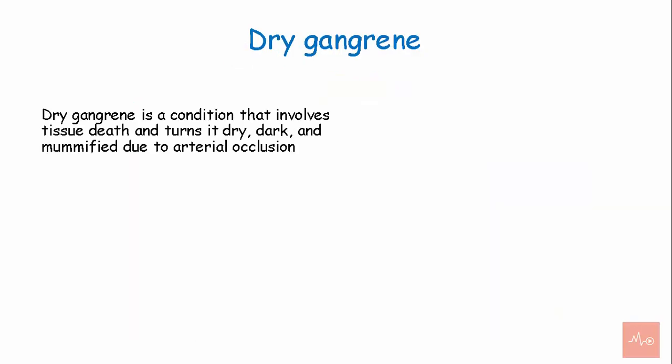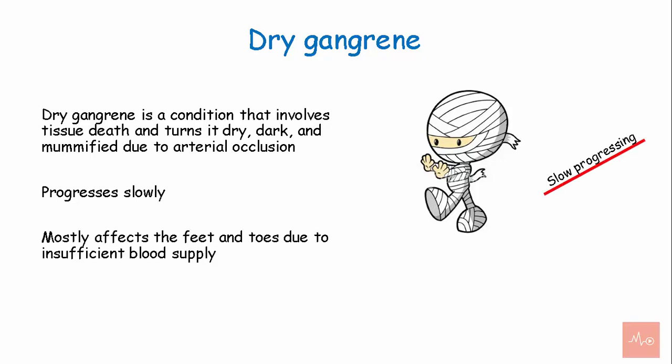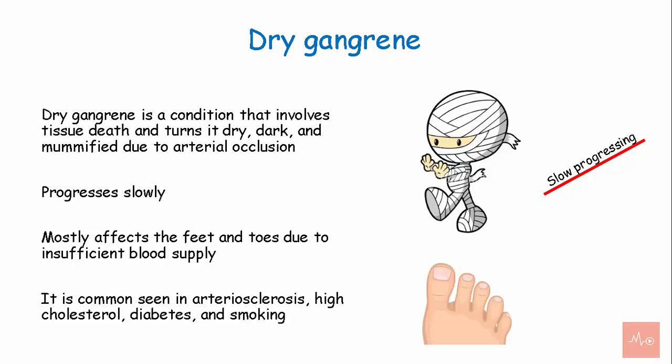Dry gangrene is a condition that involves tissue death and turns the skin dry and dark. It is mummified due to arterial occlusion and progresses slowly. It mostly affects the feet and the toes due to reduced blood supply. It is commonly seen in arteriosclerosis, high cholesterol, diabetes, and smoking.